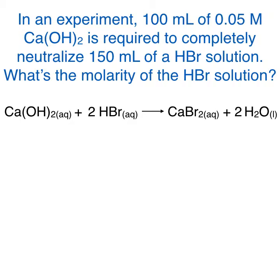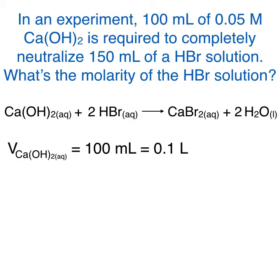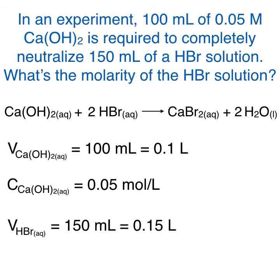We can now note all the information gathered from the problem. The volume of calcium hydroxide is 100 milliliters or 0.1 liters. The calcium hydroxide solution has a molarity of 0.05, meaning a molar concentration of 0.05 moles per liter. Lastly, the volume of hydrogen bromide is 150 milliliters or 0.15 liters.